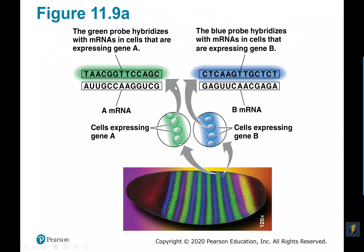Here you can see some of this hybridization. They used a pigment hybridized with some mRNA — the green hybridized with mRNA expressing gene A, and the blue hybridizes with the mRNA expressing gene B. You end up seeing an alternating pattern. You can see which cells are expressing gene A and which cells are expressing gene B just by looking at the color, since the mRNA has been hybridized with these pigment molecules. This shows how different body segments are developing in the fruit fly.